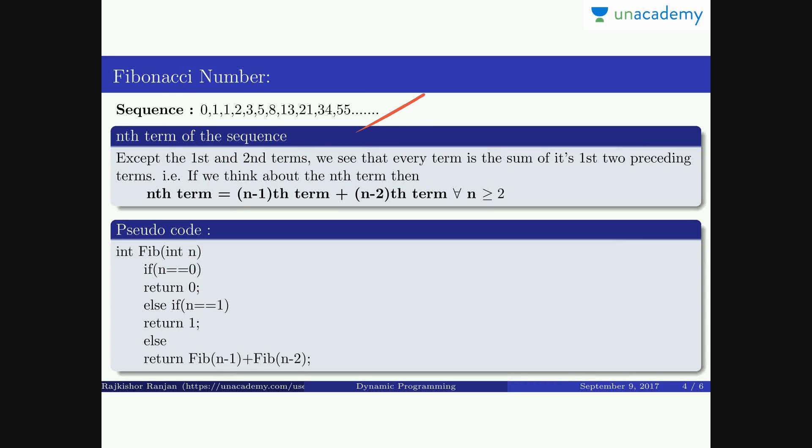The Fibonacci sequence goes: 0, 1, 1, 2, 3, 5, 8, 13, 21, 34, and 55.